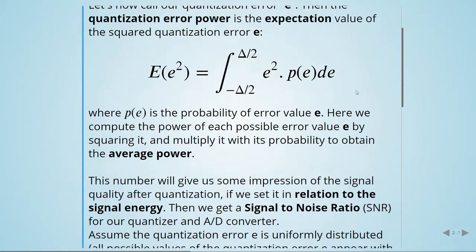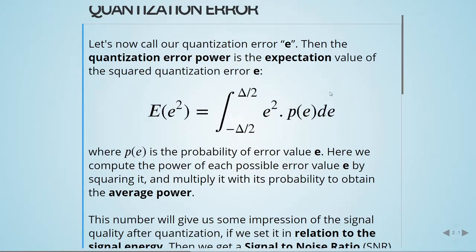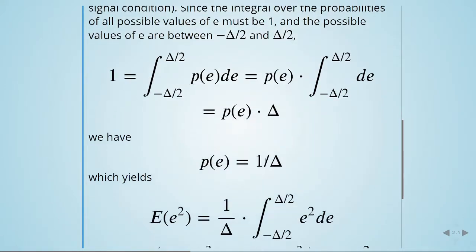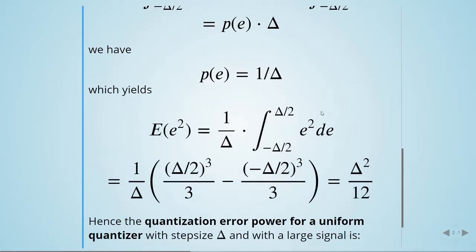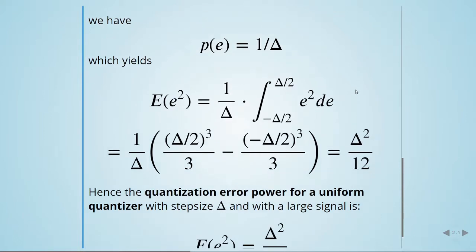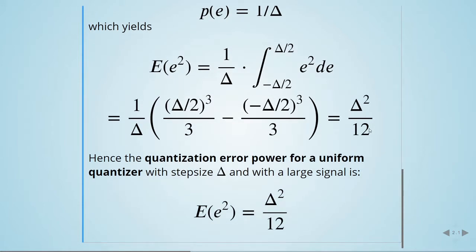and replacing p(e) with the value we obtained, we find that the quantization error power for a uniform quantizer with step size Δ and with a large signal is Δ²/12.